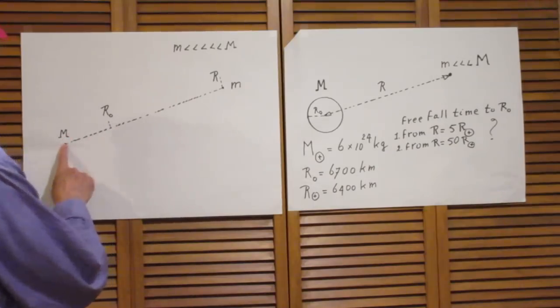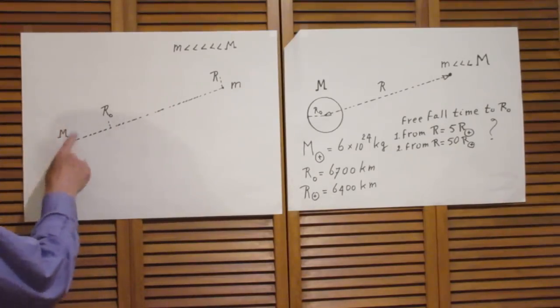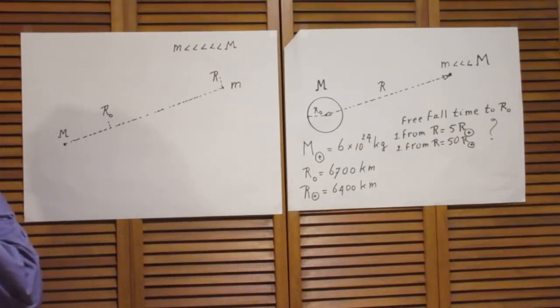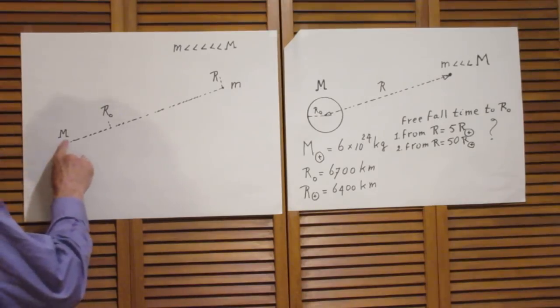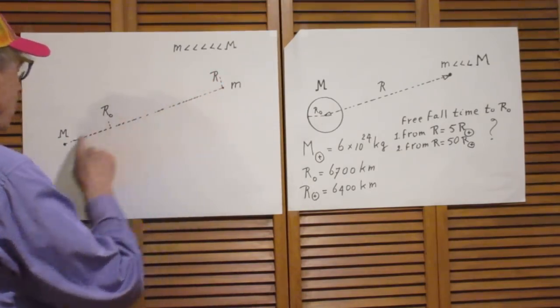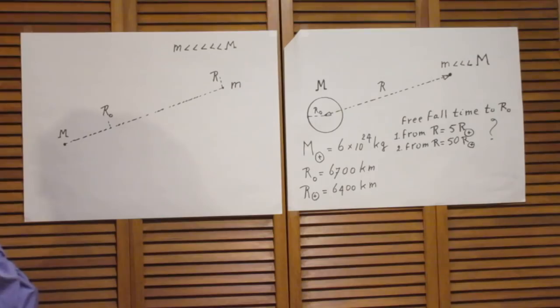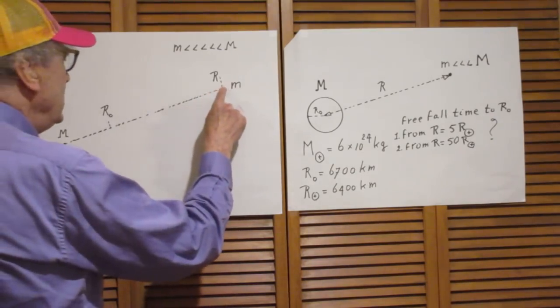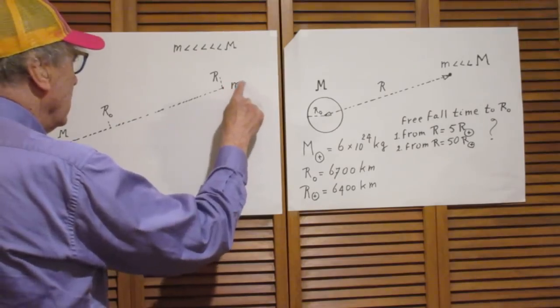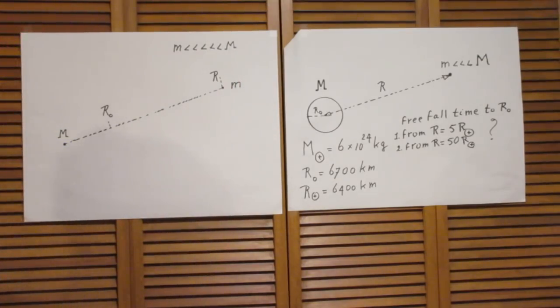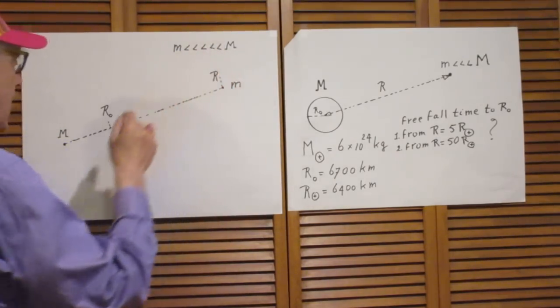Suppose we have here a planet or star with mass capital M, and at a distance R from the center of this planet, I release at zero speed a mass little m, which is way smaller than capital M.